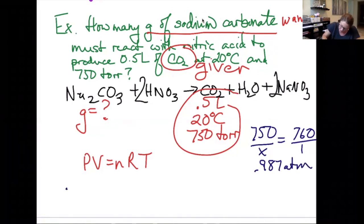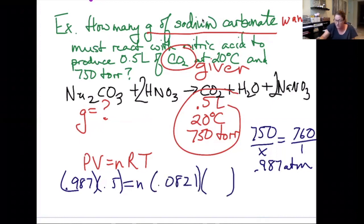So now plugging into PV equals nRT, 0.987 times the volume 0.5 liters equals the moles that I'm looking for times 0.0821 times the temperature of 20 degrees Celsius. 20 plus 273 is 293 Kelvin. 0.987 times 0.5 divided by 0.0821 and divided by 293 gives me 0.0205 moles of CO2.